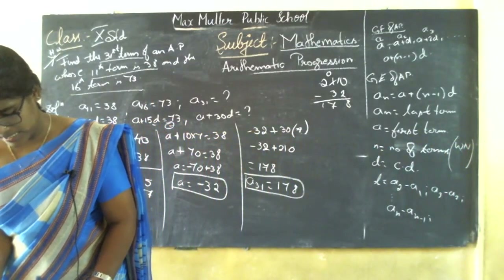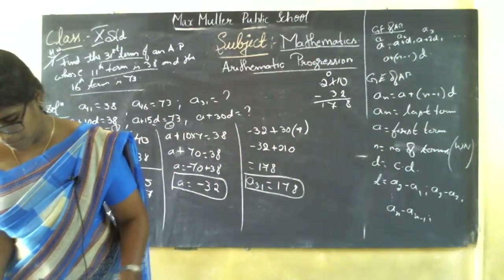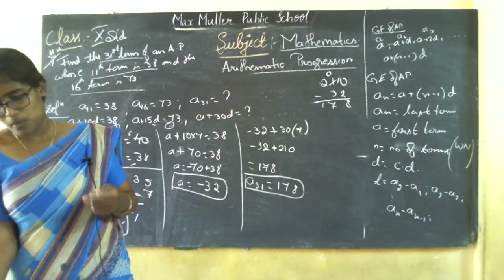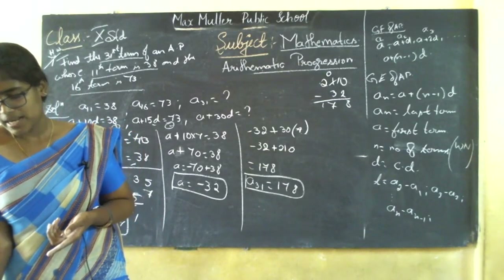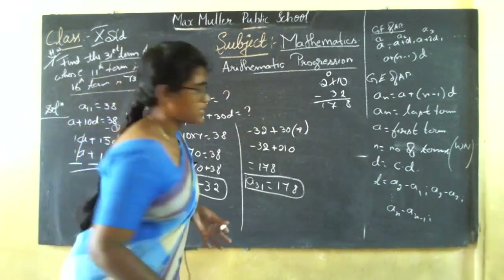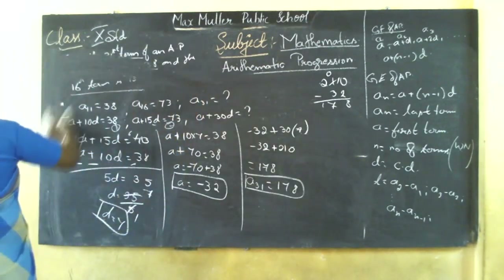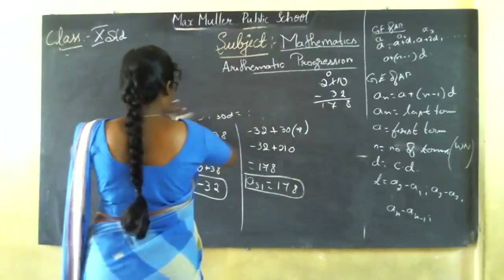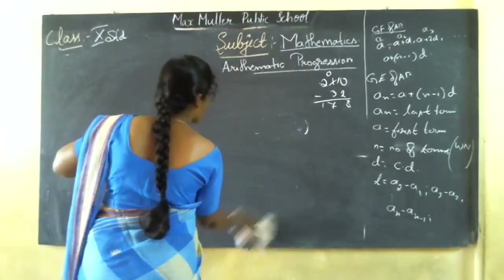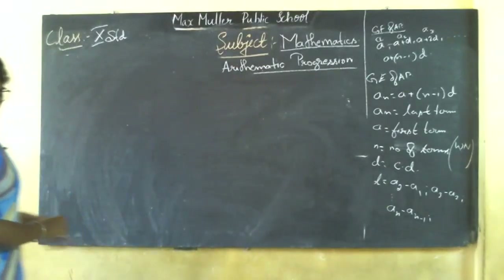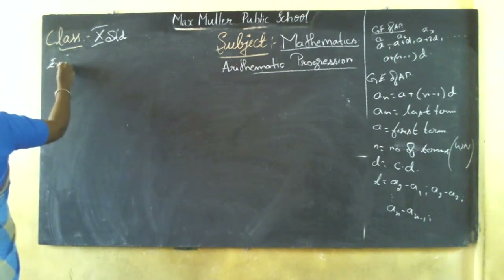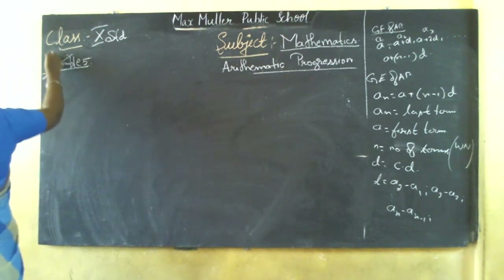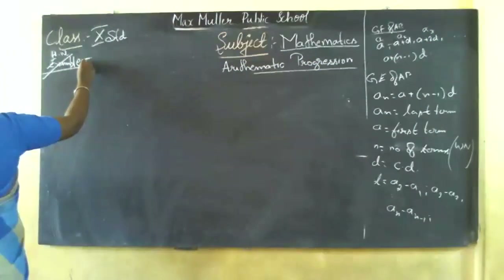Coming to example number 6, which is similar to the sixth sum in your exercise. Check whether 301 is a term of the list of numbers 5, 11, 17, 23... Take example number 6 as homework — it should be written in your homework book. Since you do not have the textbook, example sums won't be in the PDF, so copy this question.